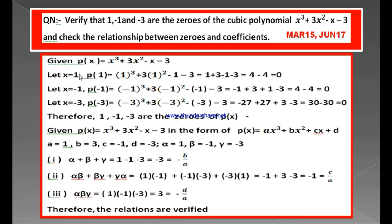When we substitute x equal to 1, x equal to minus 1, and x equal to minus 3, we get the value of the polynomial as 0 in all three cases. Since P of x is equal to 0 for these three values, these values are called the zeros of the polynomial. The zero of a polynomial is the value of the variable for which the total polynomial equals 0. So x equals 1, x equals minus 1, and x equals minus 3 are each values of the variable for which the total polynomial value is 0. Therefore, the values of the variable for which the total polynomial becomes 0 are called zeros of the polynomial.